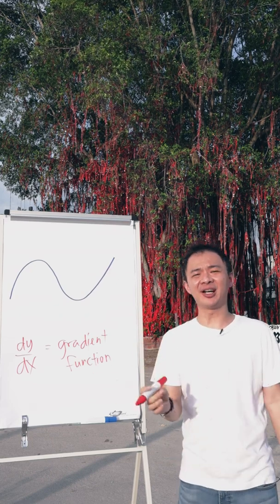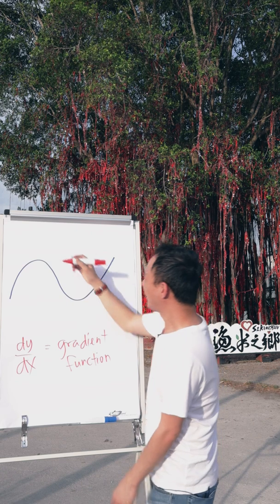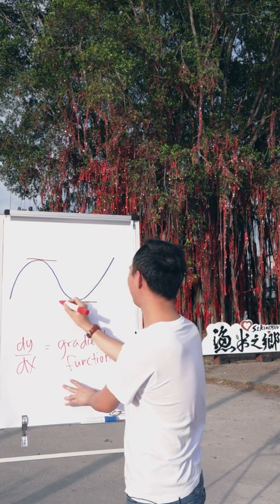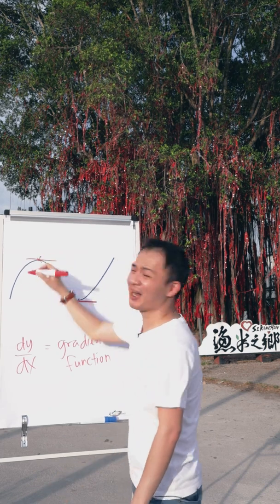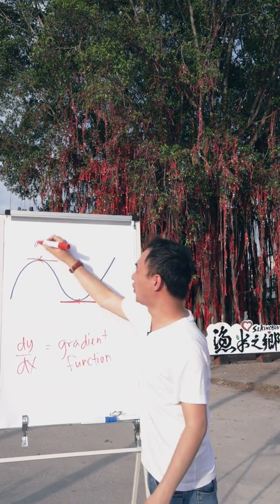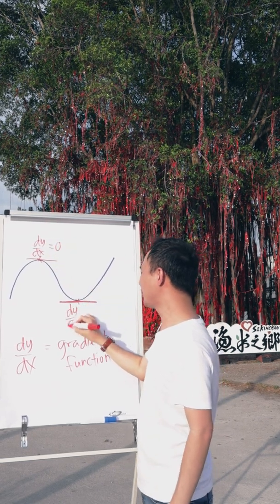So when you have the gradient of the curve, there's a few important points I want you to know here. The first thing is the maximum or the minimum point. So whenever it's a maximum or minimum point, we must know dy/dx will always equal to zero.